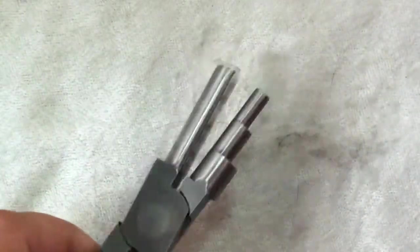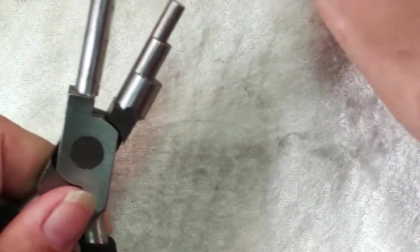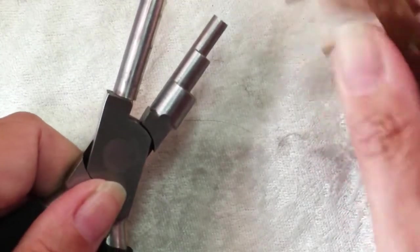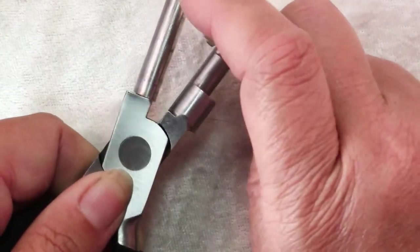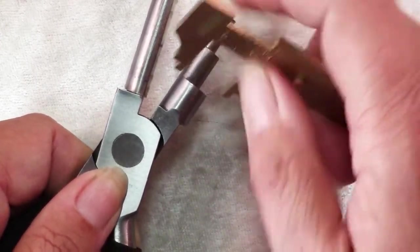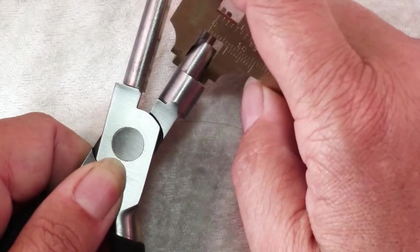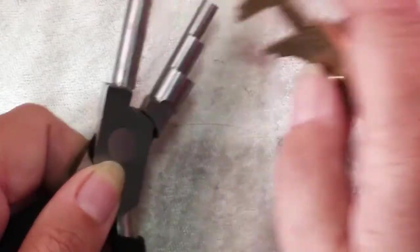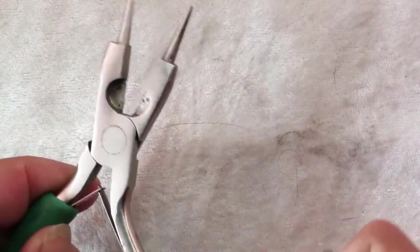You can also measure your tools. I have this set of bail making pliers and keep forgetting how big each jaw is. With my calipers I can see that one's 5 millimeters, that one's 7, and that one's 10.